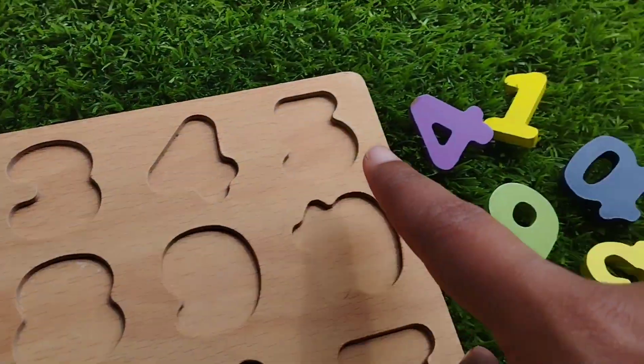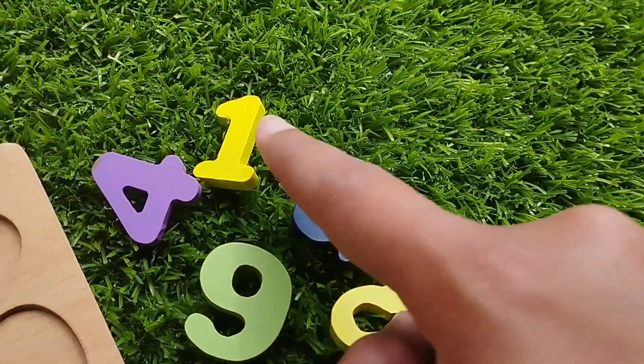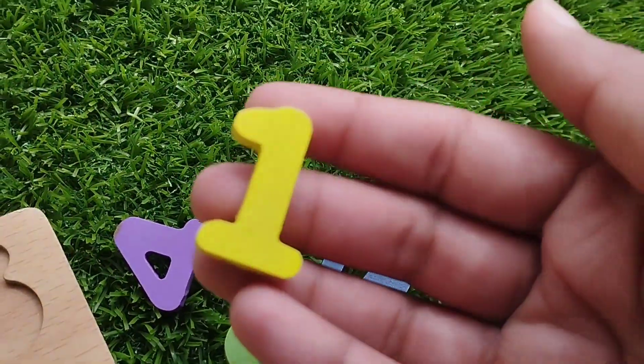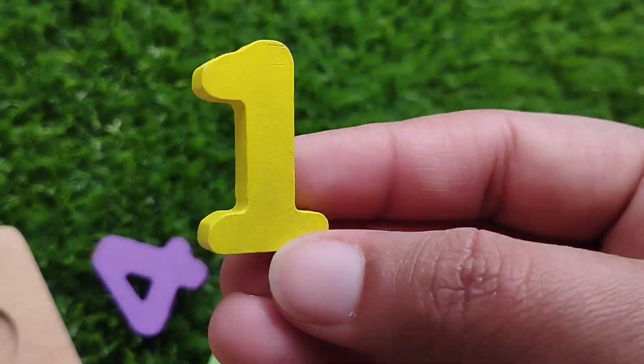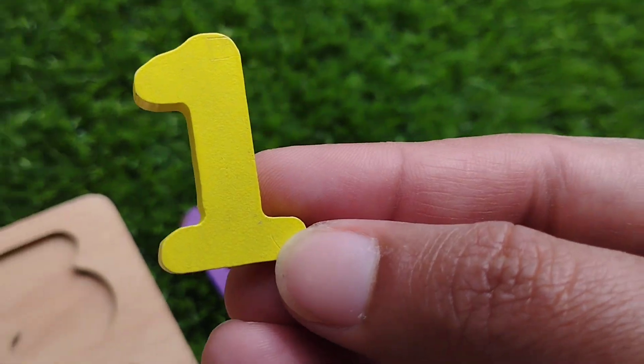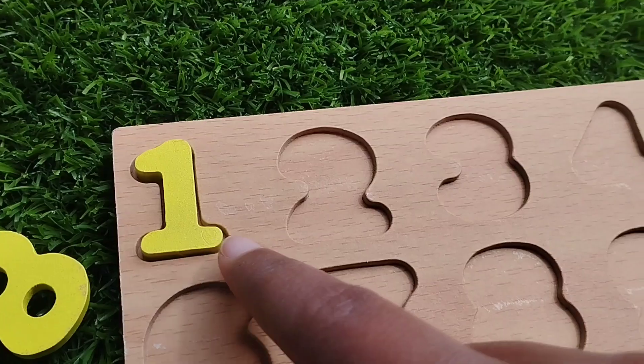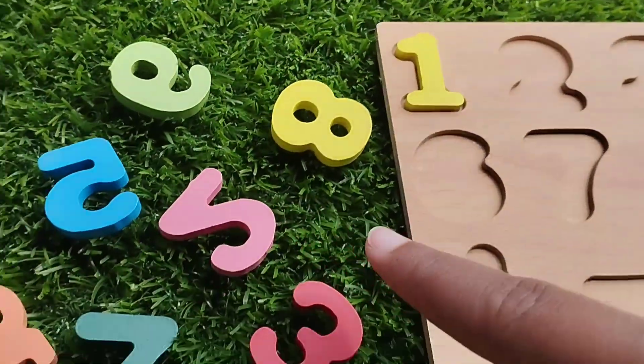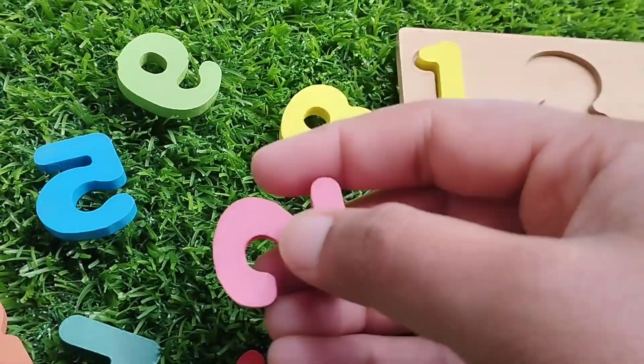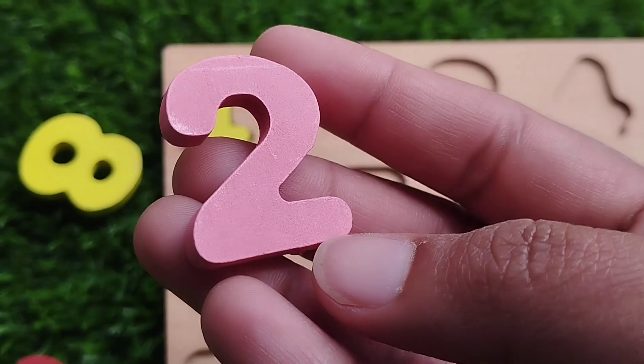The first number is one. Where is number one? This is number one. Number one. The next number is number two. This is number two.